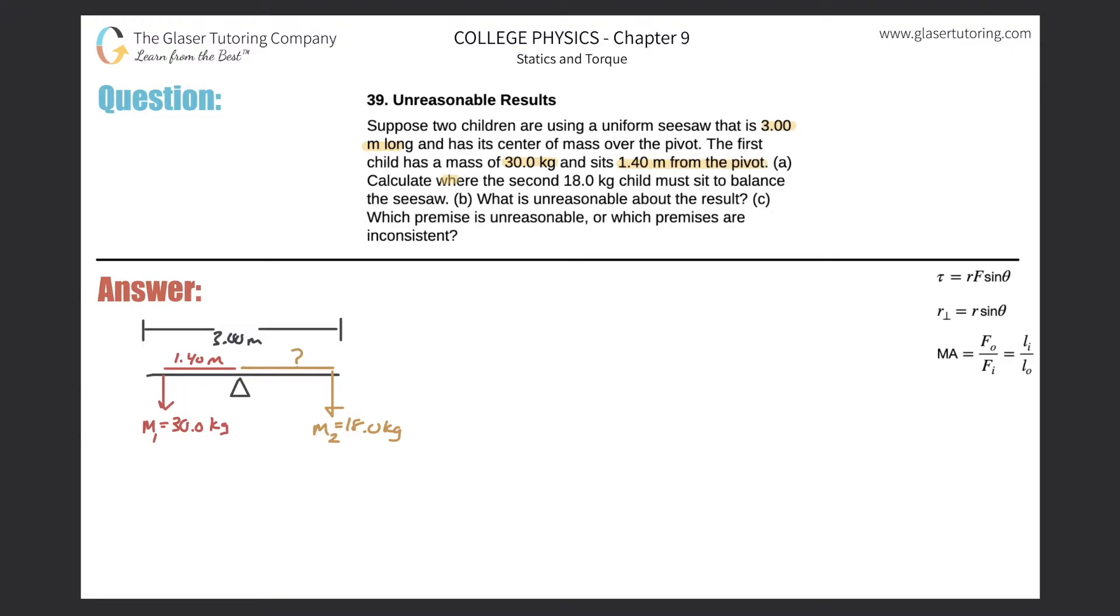The first child has a mass of 30 kilograms and sits 1.4 meters from the pivot. Letter A. Calculate where the second 18 kilogram child must sit to balance the seesaw.